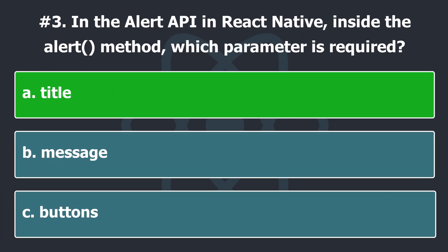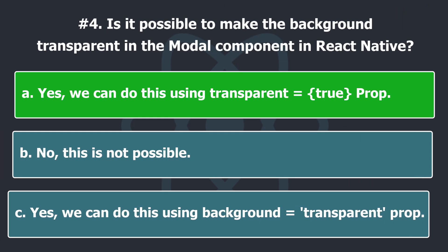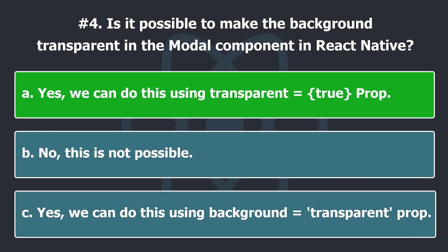The dialog's title is required inside the alert method, but passing null or an empty string will hide the title. The transparent prop determines whether your modal will fill the entire view; setting this to true will render the modal over a transparent background.